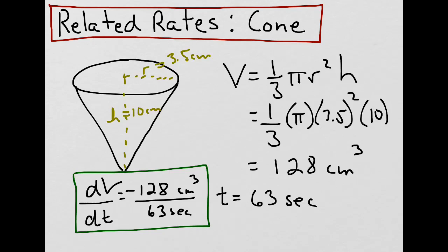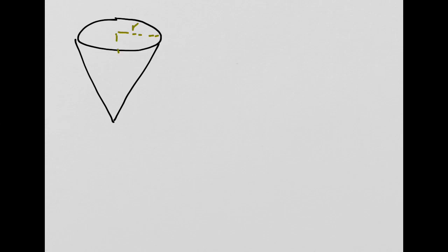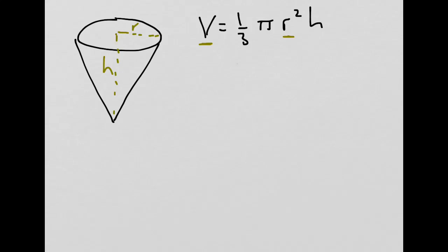Now let's relate this rate to the change in height of the water with respect to time, which we were talking about earlier. Let's come back to a cone with a certain radius r and a certain height h. We know the volume of this cone is 1/3 π r² h. We notice that volume is dependent on both the radius and the height, but we're only interested in the height. So let's find a way to represent volume in terms of just height, rather than both height and radius.